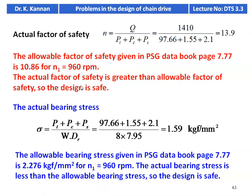These two checks must be done for the design of a chain: when the factor of safety is greater than the allowable value, it is safe. If the value is not greater, we have to go to the next level of chain with higher specification and redo the calculations. Similarly for bearing stress, the value should be lesser than the given value; if not, go to the next chain specification.